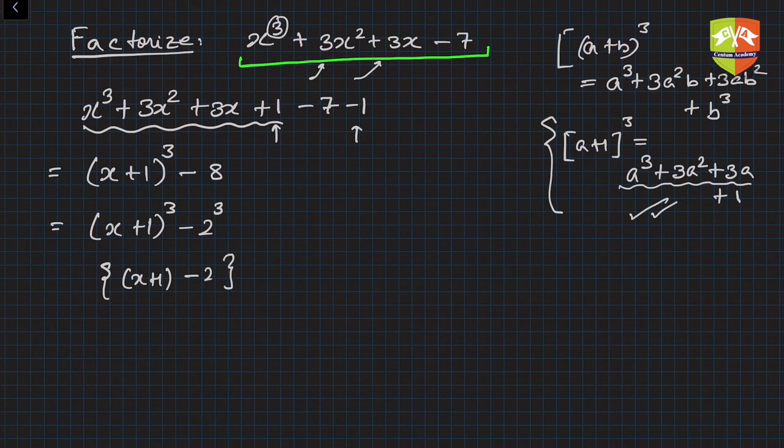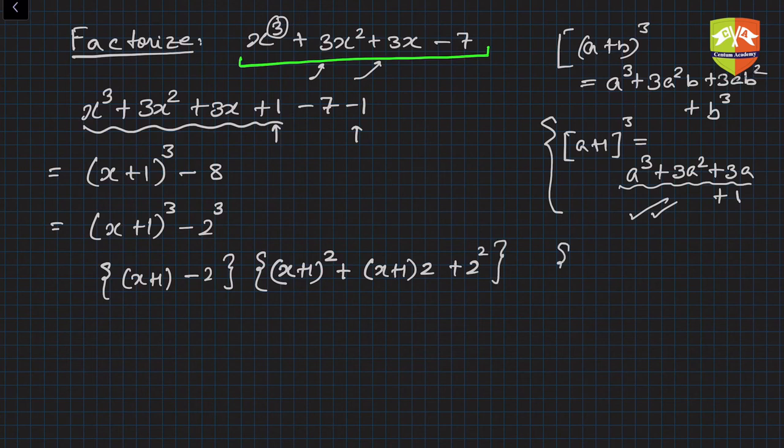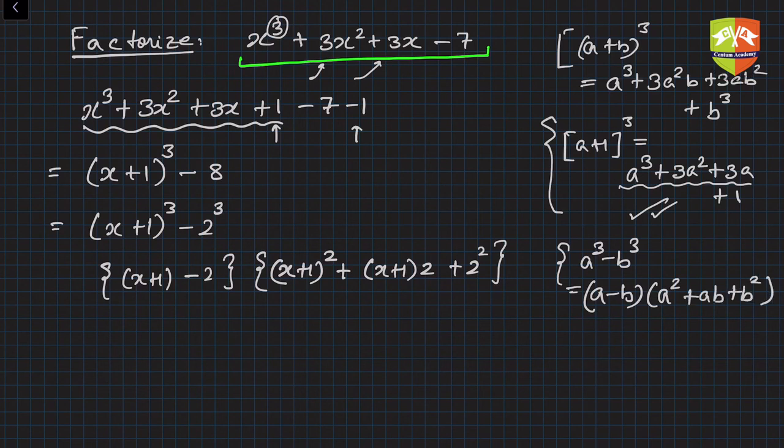Which is nothing but you take (x + 1) - 2, then within other brackets (x + 1)² + (x + 1)·2 + 2². Which formula, folks? So a³ - b³ by identity is (a - b)(a² + ab + b²). So we use the same thing.